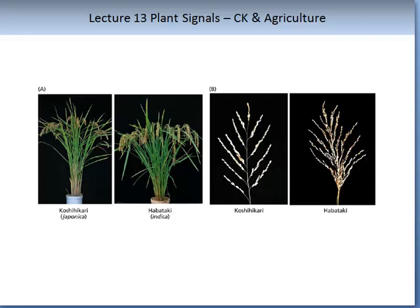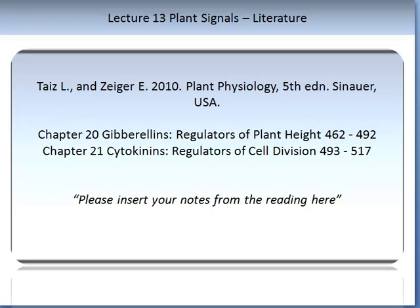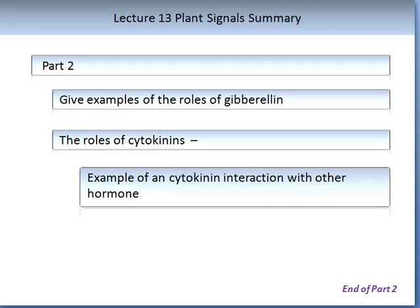I'd like you to read the following chapters from the recommended textbook, Taiz and Zeiger, 2010 Plant Physiology, 5th edition: Chapter 20 on gibberellins, regulators of plant height, and Chapter 21 on cytokinins, regulation of cell division. Please make notes on these readings and insert them into the lecture here. That brings us to the end of lecture 13 on plant signals, part 2.